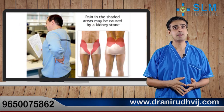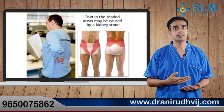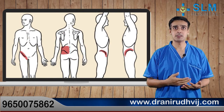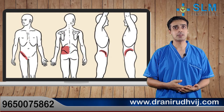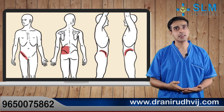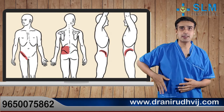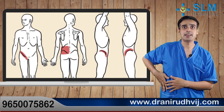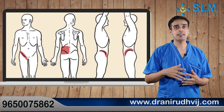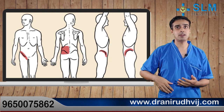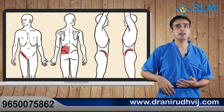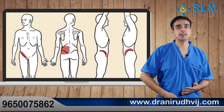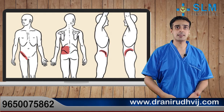The most common symptom for a stone present within the urinary tract is pain. The site of pain depends upon the location of the stone. When the stone is present within the kidney or the upper part of the urinary tract, the pain is usually located in the loin area — the waist area — and it usually radiates backwards. When the stone is in the lower part of the urinary tract, like the ureter or the urinary bladder, the pain radiates downwards to the groin, and in males it can radiate towards the testicles.